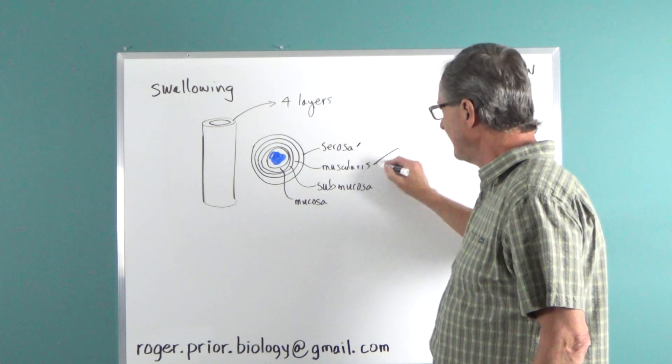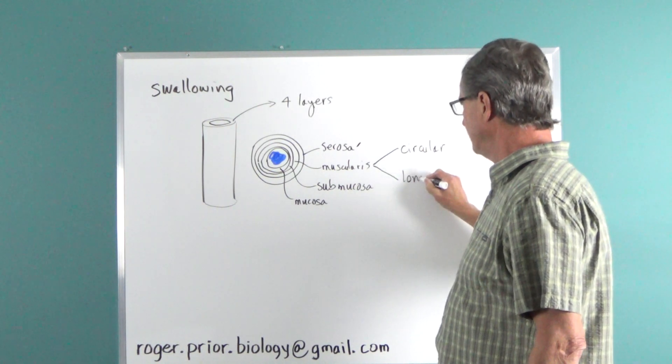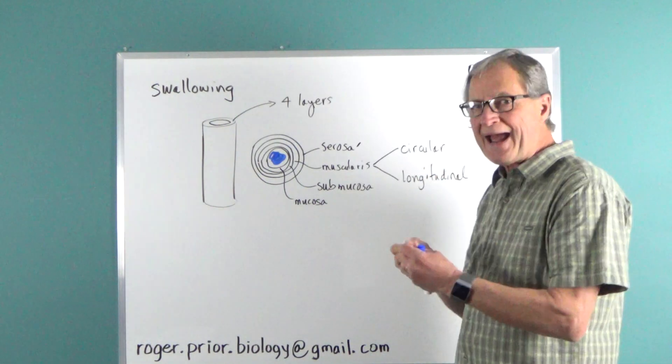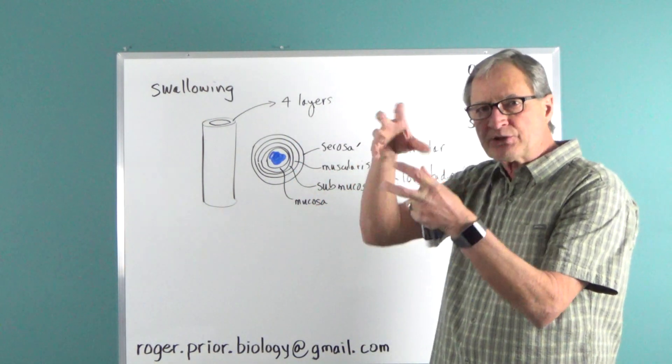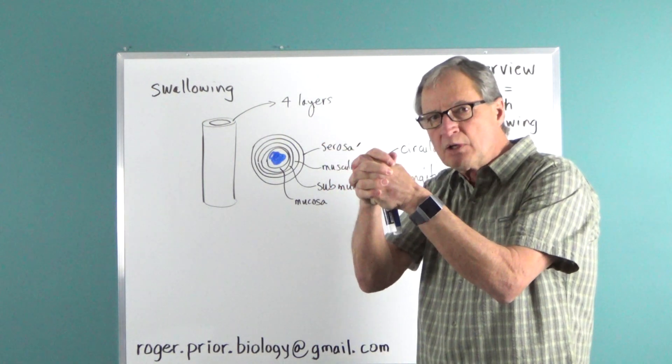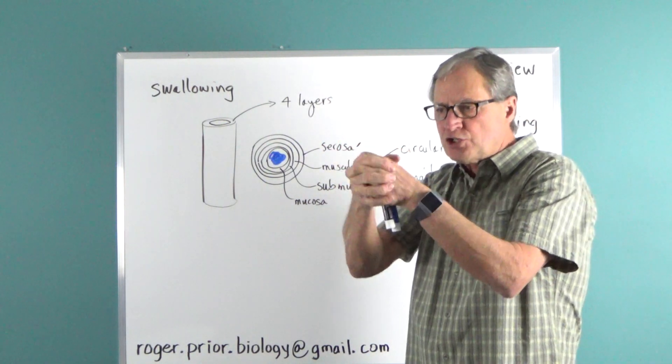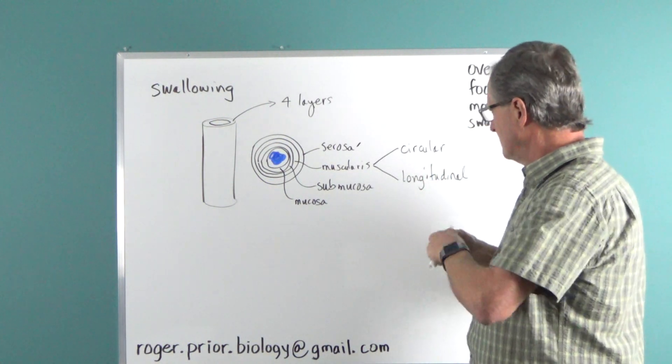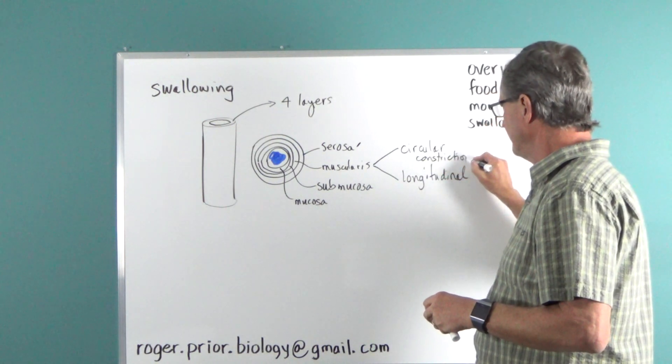This one has two layers. There's a circular layer and a longitudinal layer. And it's the combined action of these two layers of muscles inside that layer there. There's those two muscle layers that when the circular muscle contracts, it constricts. When the longitudinal muscles contract, they actually shorten. So you get this combined action of constriction and shortening. Constriction. Shortening.